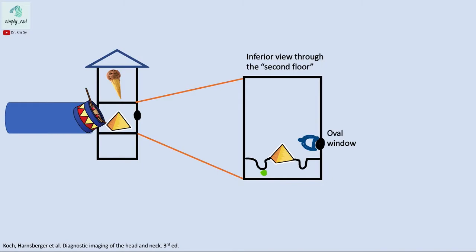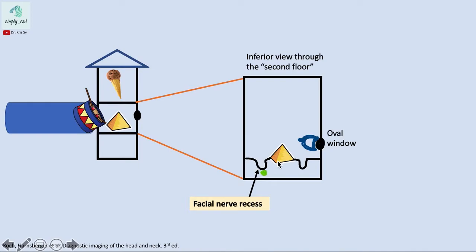Looking at an actual axial image, we identify the depressions on both sides of the pyramidal eminence. The depression lateral to the eminence is called the facial nerve recess. The depression on the other side, the medial portion, is the sinus tympani. We know this is the medial portion because we see the stapes and oval window nearby.